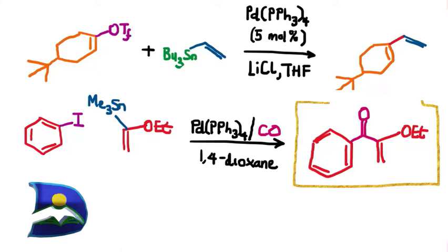Hello everyone and welcome to this video. We're continuing from where we stopped involving cross coupling. In the previous video we looked at how cross coupling is crucial in bringing two R groups together to form a new sigma bond, and how this is crucial in a specific mechanism step that involves transmetallation. In that step we actually form two palladium-carbon bonds, which are then used by reductive elimination to create our major product.